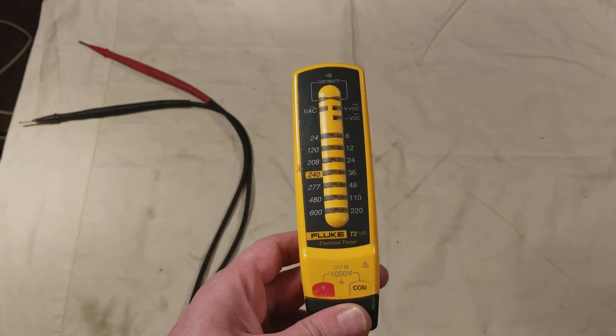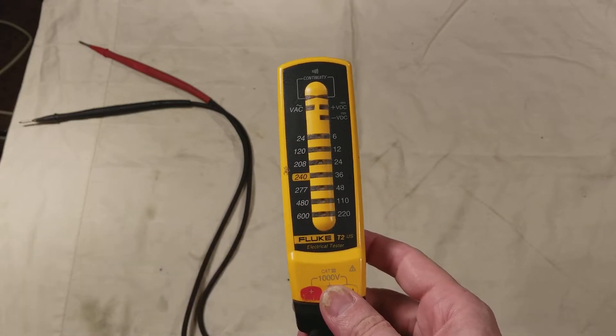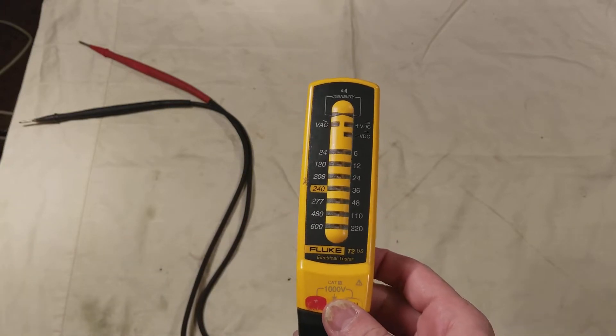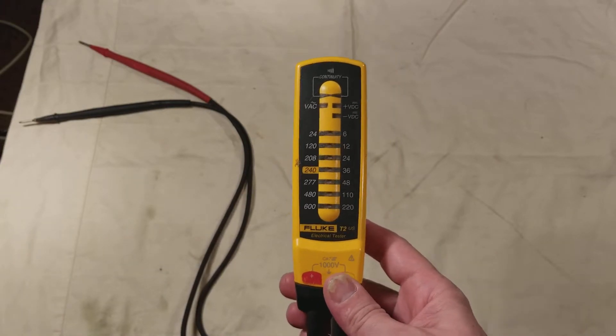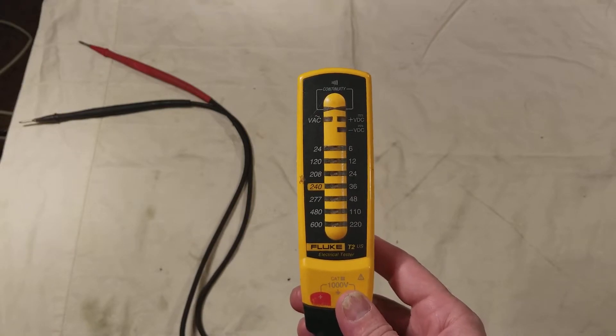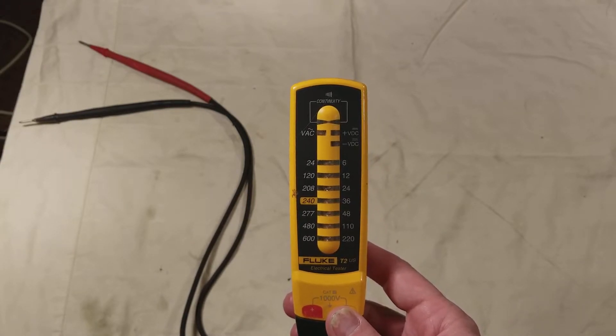Caddis Maximus here, this time with the Fluke T2US continuity tester. This is just a basic tester that an electrician would use when you don't need to carry around a whole multimeter because you're just wiring outlets and light switches.